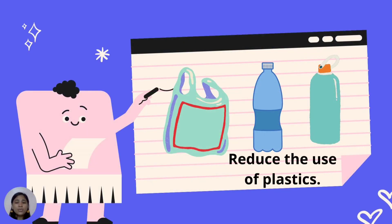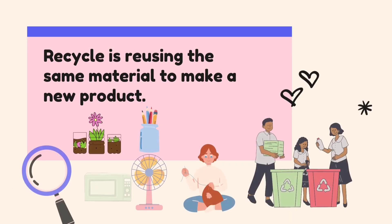Another way to manage waste in the environment is to reduce the use of plastics. Plastics are non-biodegradable — you learned in the previous lesson that plastics can live for hundreds of years. It is better to bring an eco-bag for storage and keeping of grocery items. Another way to reduce plastic is to have your own tumbler to limit the use of plastic bottles for drinking. Plastics are also good materials to recycle. Recycling is reusing the same material to make a new product — plastic bottles can be recycled as a flower vase or pencil holder.